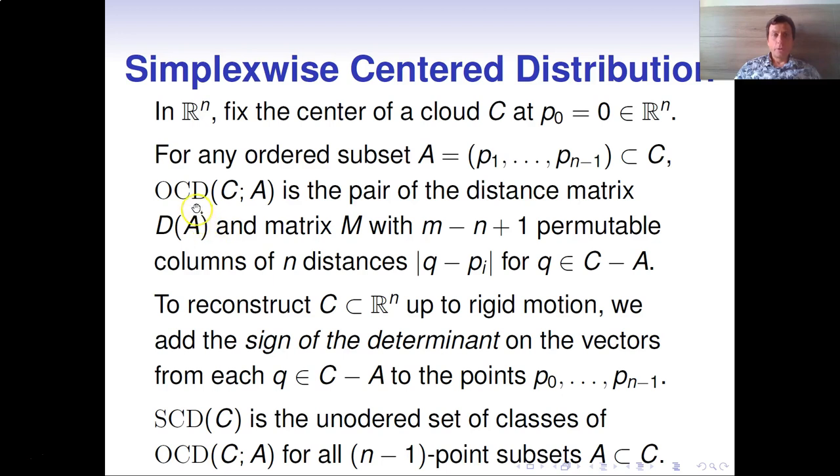We build oriented center distribution as a pair of two objects: the distance matrix D of A and the matrix with m-n+1 permutable columns of distances from any other point of our cloud to the ordered points P0, P1, P3, Pn-1. To reconstruct our cloud C up to rigid motion, not only up to isometry, we also need the sign of the determinant on the vectors from every other point Q to the fixed points P0, Pn-1.